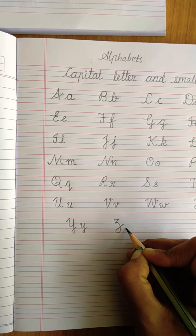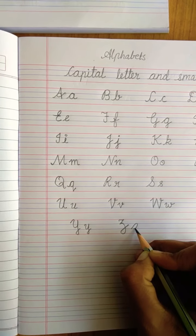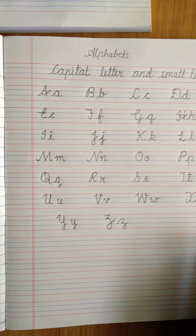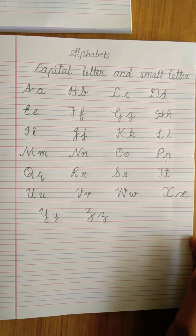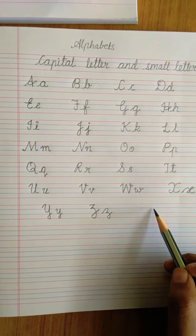Same way, start from blue line. Go up, take a round here. Touch to the last blue line. And in this way, Z. Kids, you have to complete it in the same way. Write it, practice it again and again. Okay, bye bye.